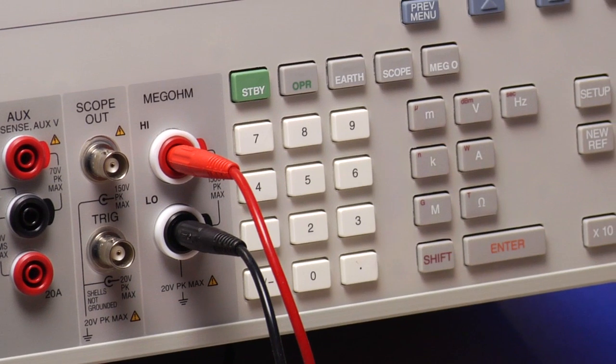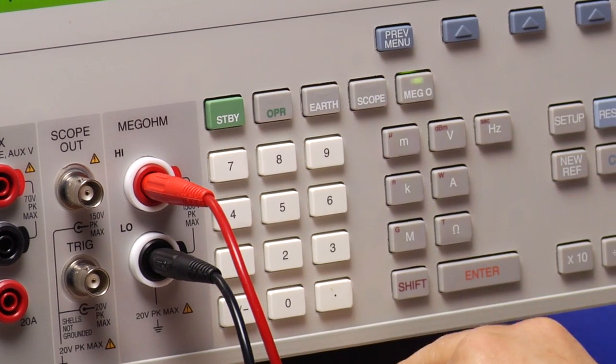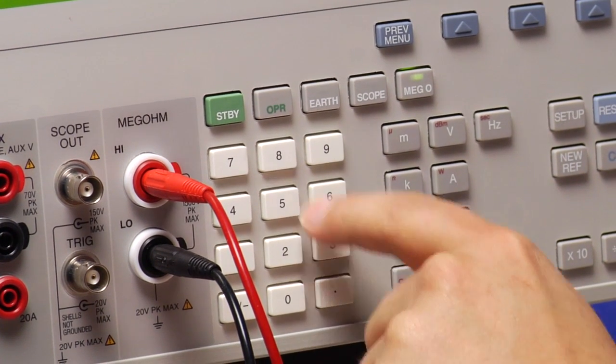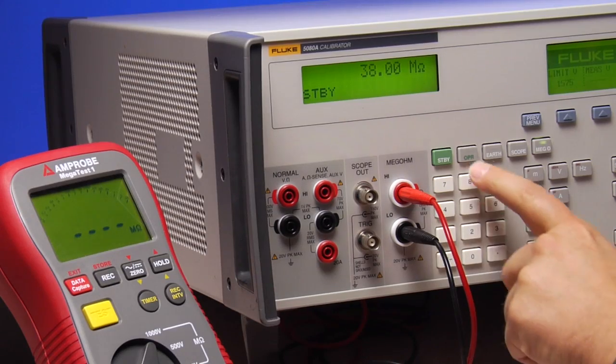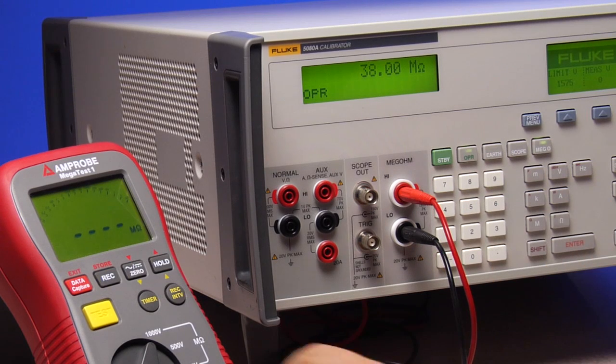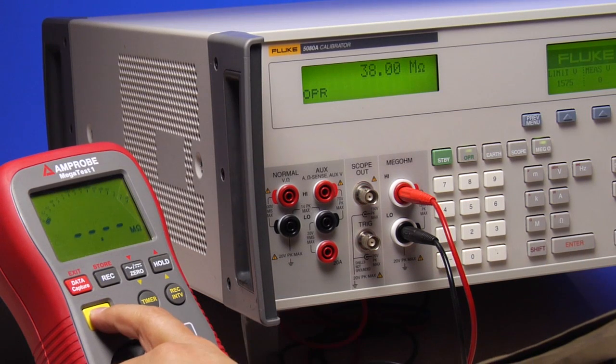The mega ohm meter calibration option enables safe and efficient calibration of insulation testers. This option sources insulation and continuity resistance and measures voltage and current inputs.